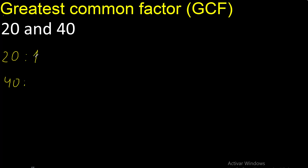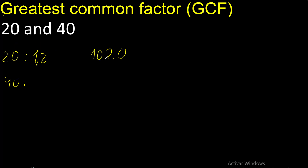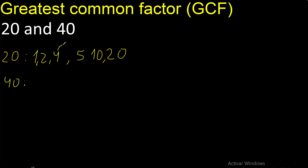Factors — always start with 1. 20 divided by 1 is 20. Next, 20 divided by 2 is 10. Next, 20 cannot be divided by 3. Next, divided by 4 is 5. Next — 5 is here.